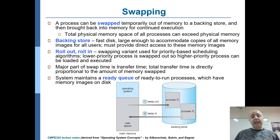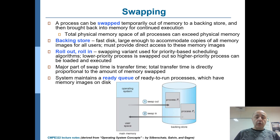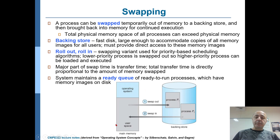The memory space for that process has become available. You can then bring in the previously stored memory image of some other process into that place. The backing store — also called swap storage or swap partition — is a fast disk, typically large enough to accommodate copies of all memory images for all processes running in the system. Taking a process out of memory and writing it to swap storage is called swap out, also called roll out. Bringing it back is called swap in.